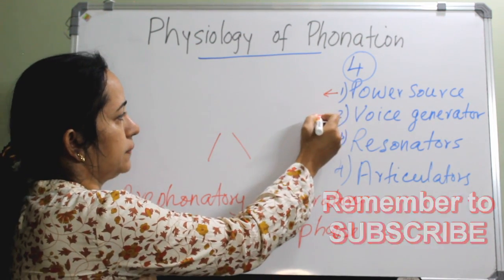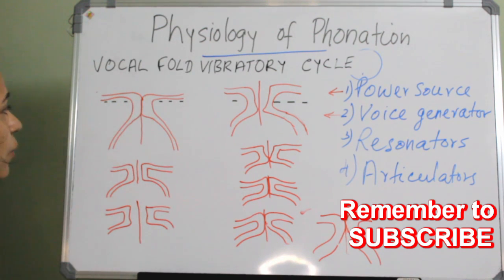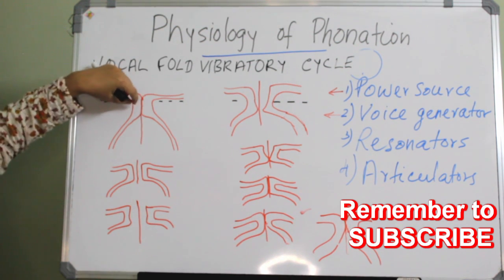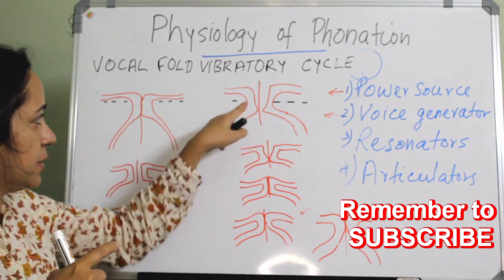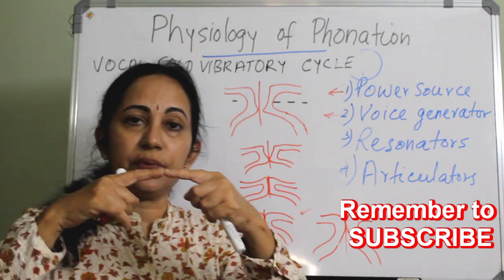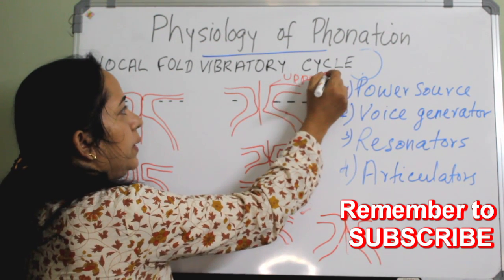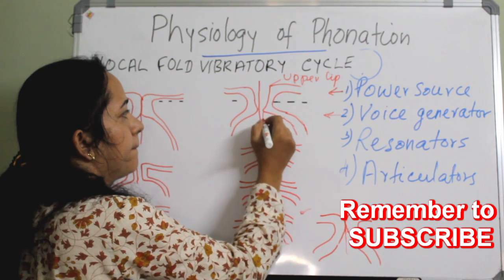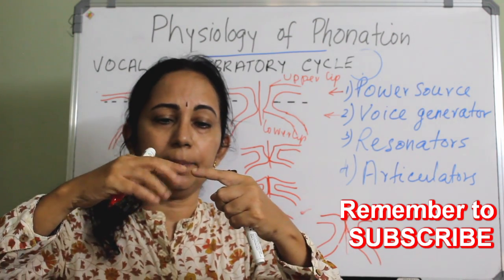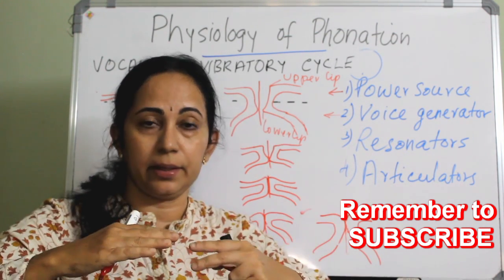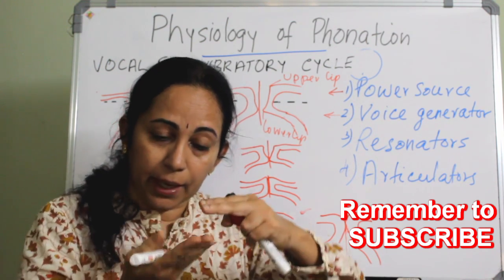Now the voice generator. After the pre-phonatory inspiratory phase, the vocal folds adduct. The vocal fold has a free border, and that free border has an upper lip and a lower lip — the upper lip is above in the vertical dimension.